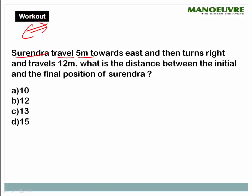Surendra travels 5 meters towards East and then turns right and travels 12 meters. What is the distance between the initial and the final position of Surendra? First, we will approach this question by the standard method, and after that we will be learning the shortcut.